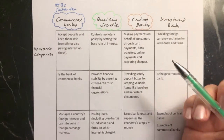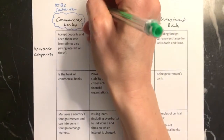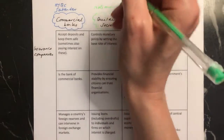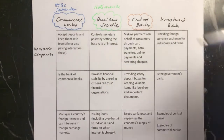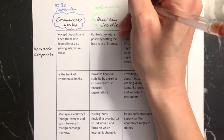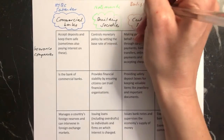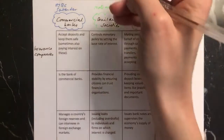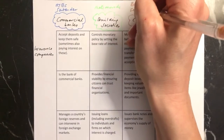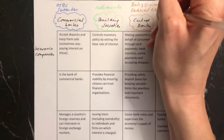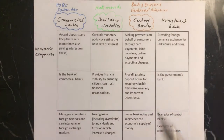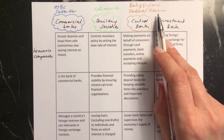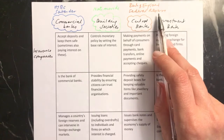A building society that you would have heard of would be the Nationwide. In the UK, the central bank is the Bank of England. If you were looking at America, it would be the Federal Reserve. And if you were looking in Europe at economies using the euro, it would be the European Central Bank.